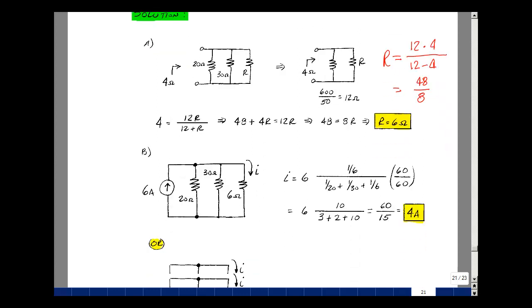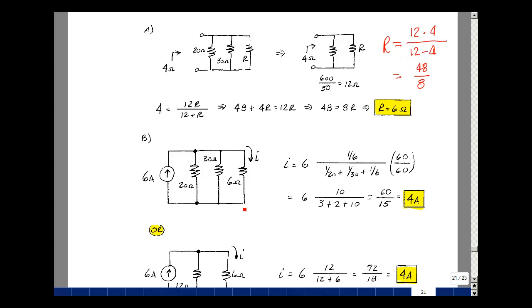Okay now let's hook the 6 amp source across the parallel combination. We could use current divider to find the current in the 6 ohm resistor. We could use our conductance form of current divider. Since you want the current in the 6 ohm resistor we'll take the conductance of that and then the conductance of the three elements.